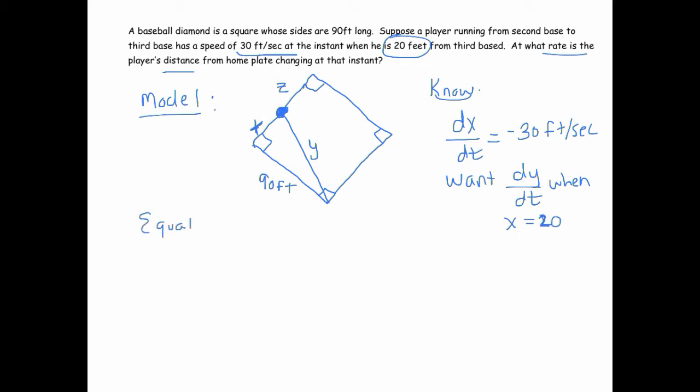So we need our equation. So, it looks like we have a Pythagorean theorem situation here. We've got x squared plus y squared, sorry, x squared plus 90 squared. Y is the hypotenuse. Plus 90 squared equals y squared.